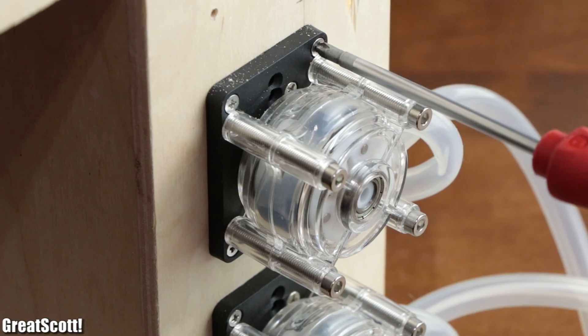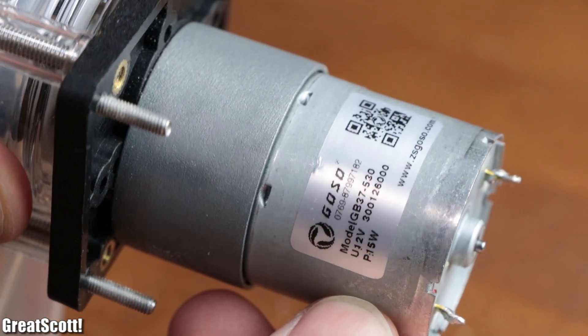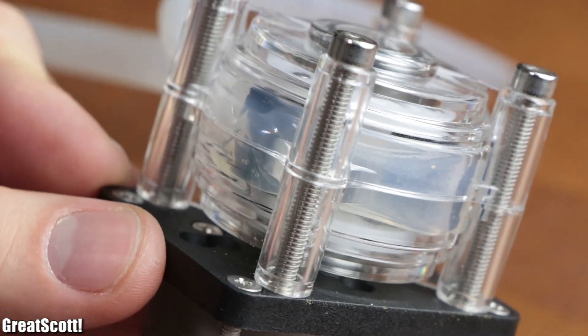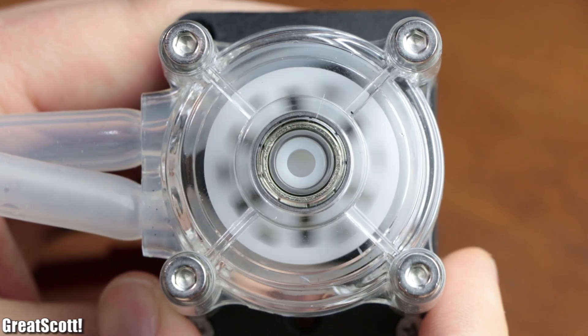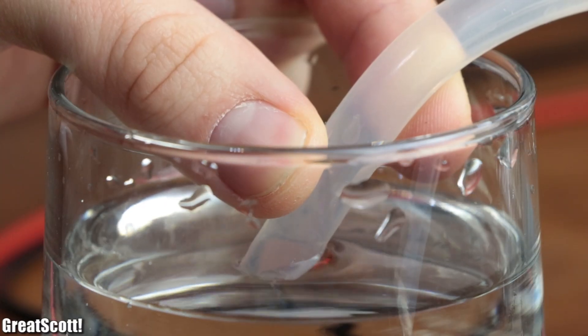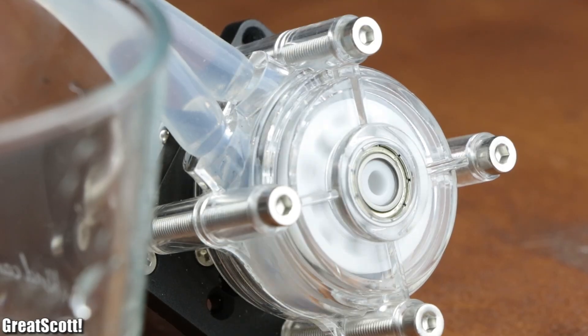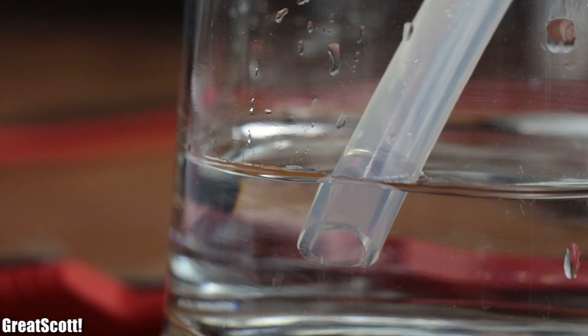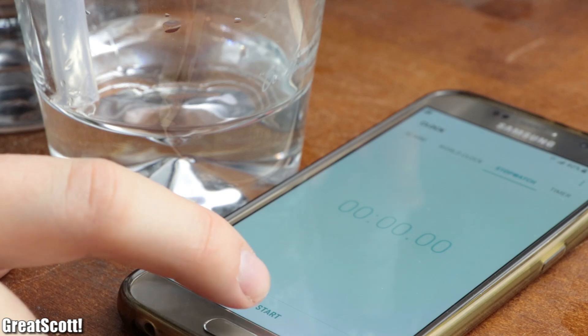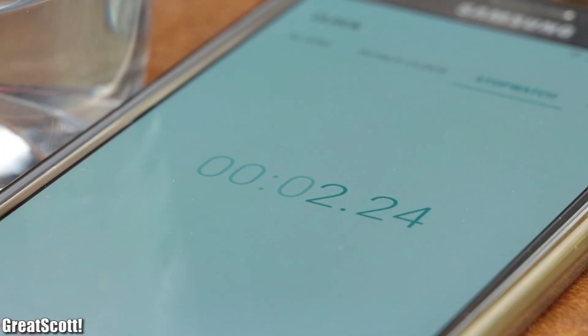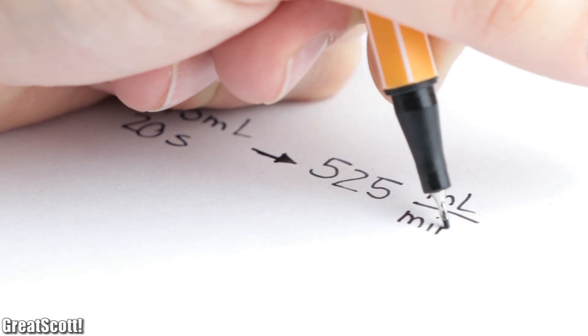The most important components of the system were three peristaltic pumps. Those are basically motors to which a mechanical structure is attached which compresses a silicon tube while the motor shaft is rotating. This way a pressure difference is created which can force liquid through the pump without attaching any mechanical parts. That makes such a pump suitable for clean, sterile, or aggressive fluids and best of all it delivers a precise amount of fluids per minute, in my case around 525 milliliters per minute.